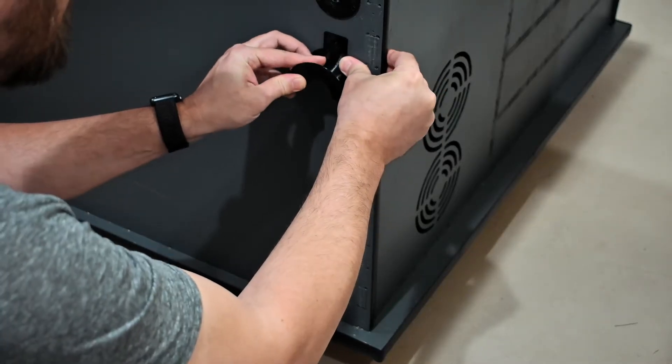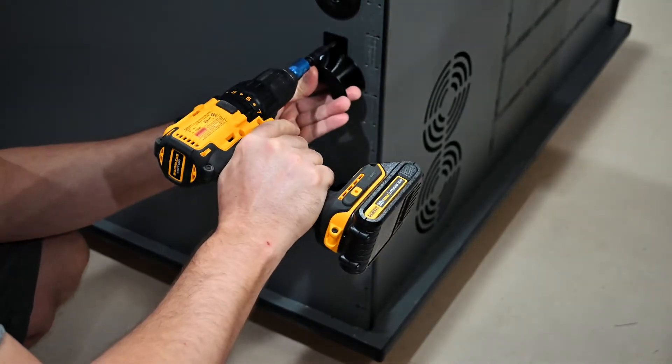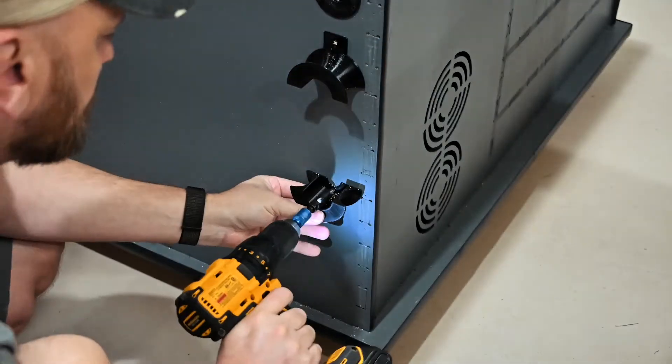Next up I added cable wraps for the power cord. The whole cabinet is on casters so this will come in handy if I want to move the cabinet around my shop.